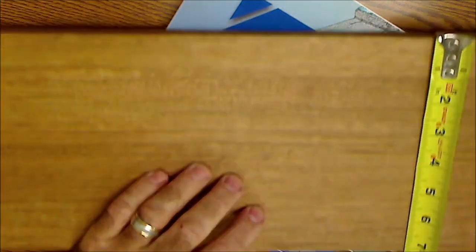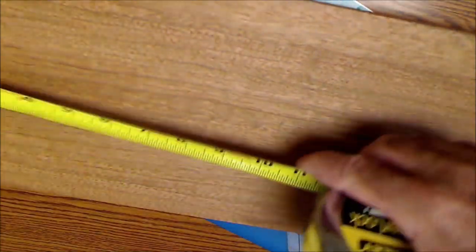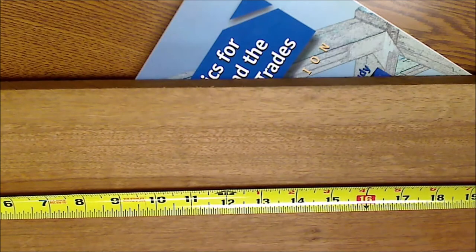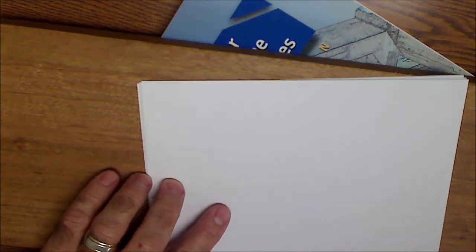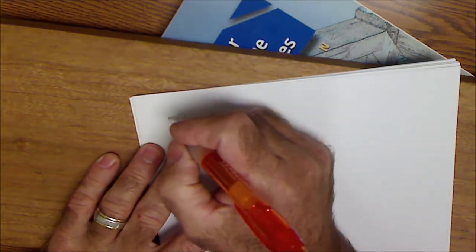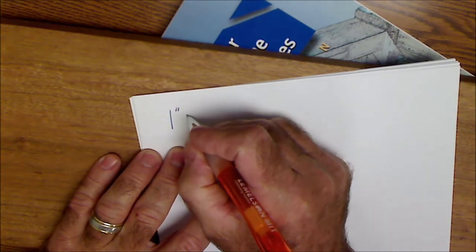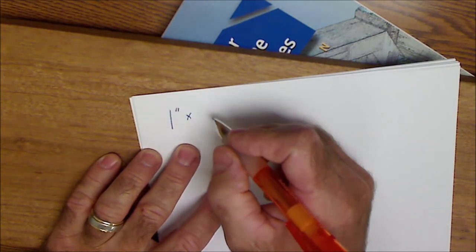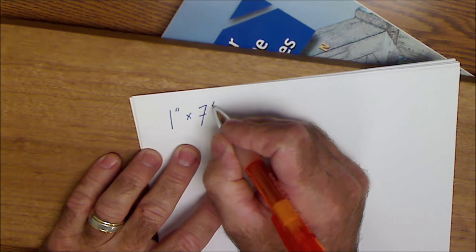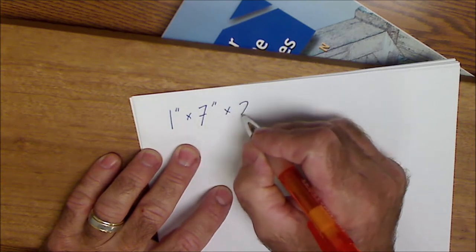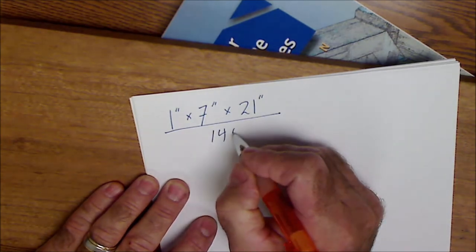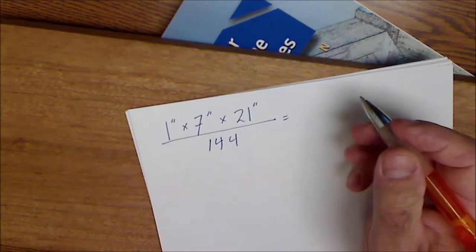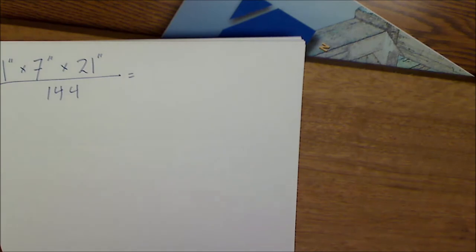This is seven in width and the overall length is 21. So the way I calculate the board feet out of that is I go one inch of thickness times the overall width, seven inches, times the length of 21 inches. And I divide that by 144. And that'll give me my total board feet. So I'll use a calculator for that.